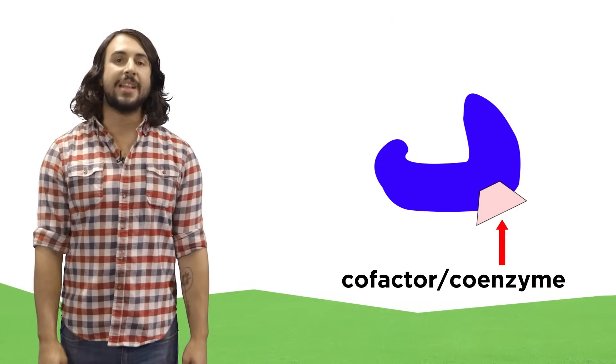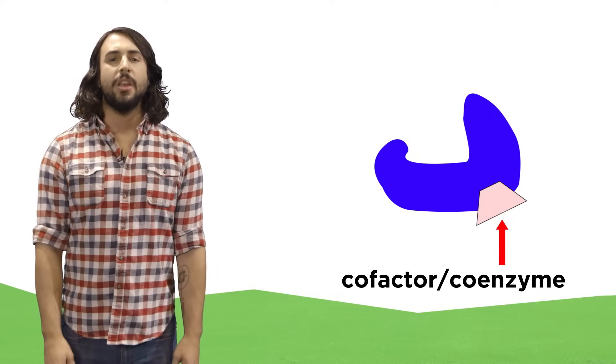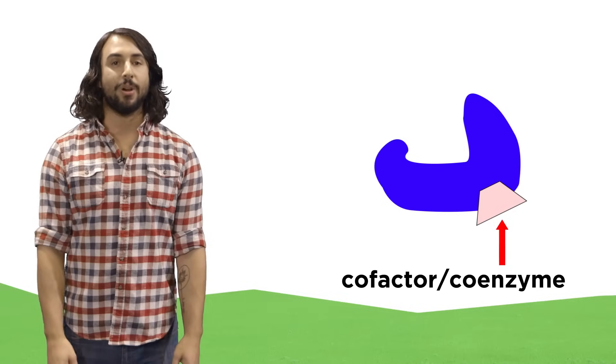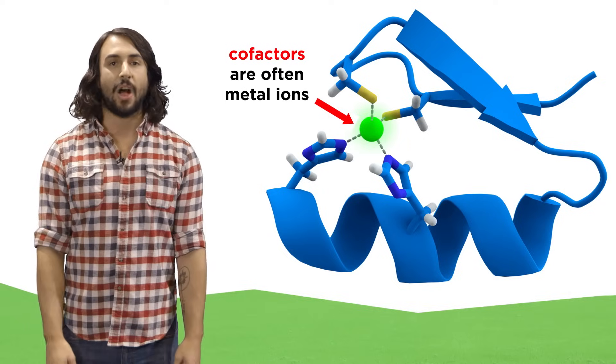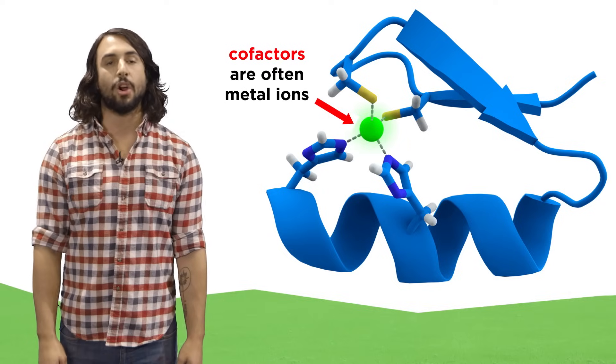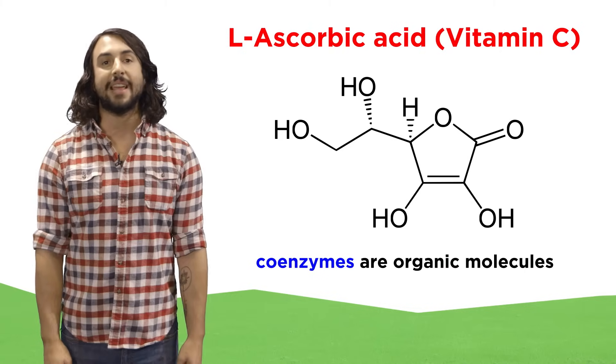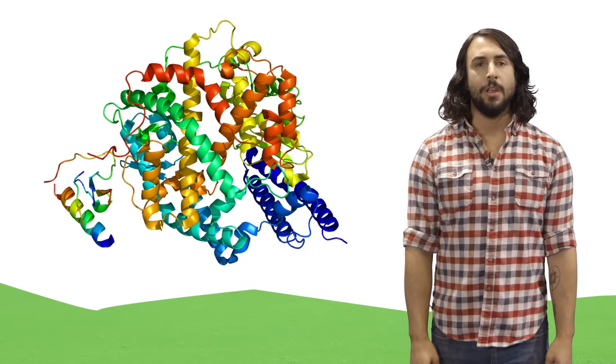Sometimes in order to function, an enzyme requires certain cofactors or coenzymes. This is some other thing that must also bind to the enzyme before it can operate on the substrate. Cofactors are things like metal ions, whereas coenzymes are actual organic molecules like vitamins. That's why we need to get all our vitamins so that our enzymes can function properly.